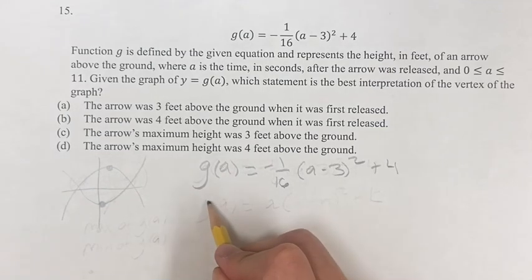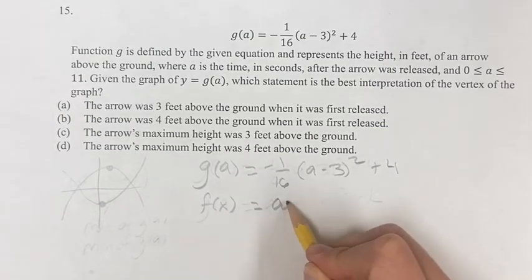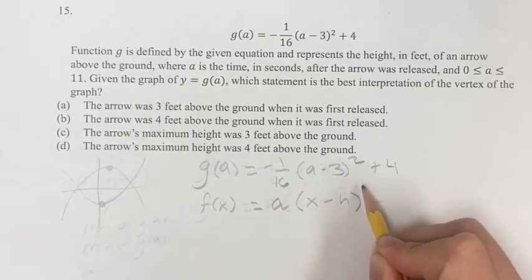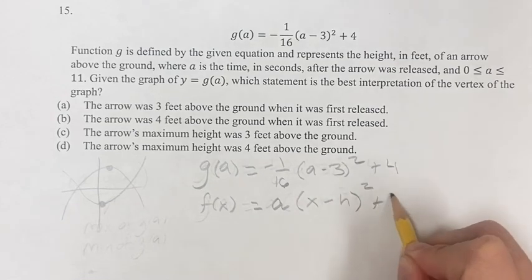And when we have this form, right, so let's say we have f of x equals a, where a is some constant, times x minus h squared. All right, we're doing f of x, so h is another constant, plus k, and you'll see this is the same form, right?